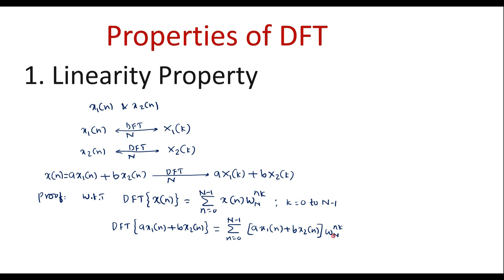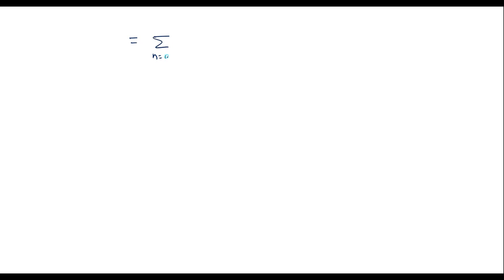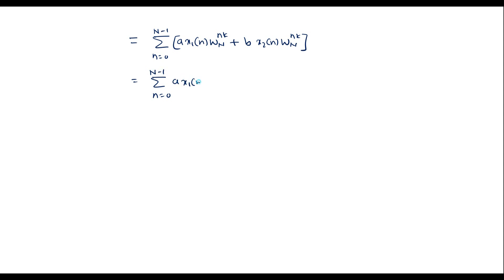I will multiply W_N power nk with each term. I can get the summation from n equals 0 to N minus 1 of a·x1 of n·W_N power nk, plus b·x2 of n·W_N power nk. Then I will separately apply this summation to each term: summation from n equals 0 to N minus 1 of a·x1 of n·W_N power nk, plus summation from n equals 0 to N minus 1 of b·x2 of n·W_N power nk.